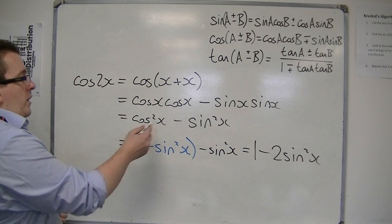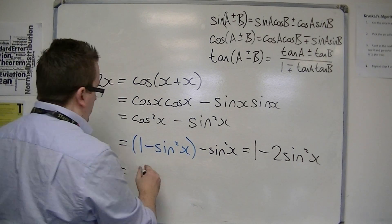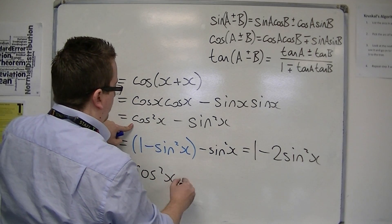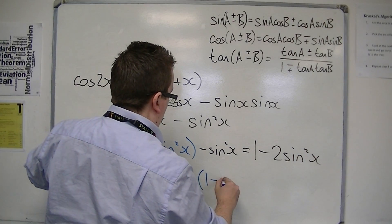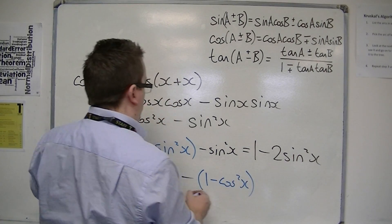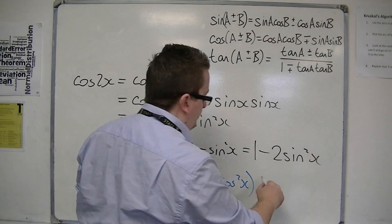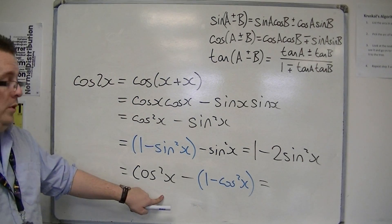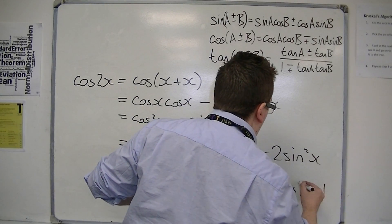Or I could have replaced the sin squared with 1 minus cos squared. So I've still got cos squared x, take away 1 minus cos squared. So that's cos squared, take away 1 minus cos squared. And we end up with 2 cos squared x minus 1.